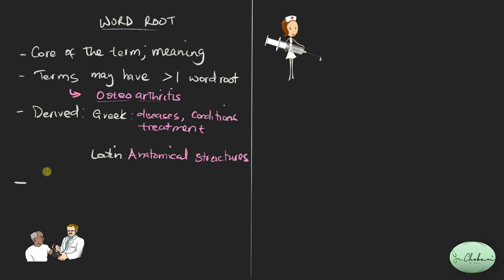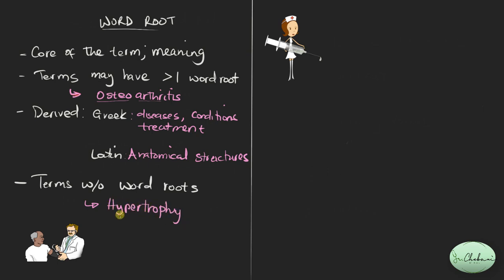Number four: there are terms without word roots. You'll also realize that there are terms without prefixes. The only mandatory part of a medical term that should always be there is the suffix. An example of a word without a word root is hypertrophy — hyper means excessive and trophy means growth, so this is excessive growth. Hyper is a prefix and trophy is a suffix, so there is no word root.